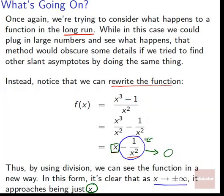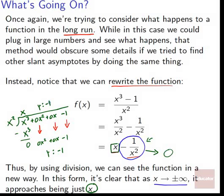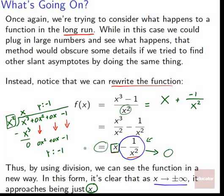We can also get this through polynomial long division, which is necessary for more complicated denominators. Dividing x squared into x cubed minus 1: x squared goes into x cubed just x times. x times x squared gives us x cubed; subtracting leaves 0. Bringing everything down gives 0x squared plus 0x minus 1, leaving a remainder of negative 1. So x cubed minus 1 over x squared equals x plus the remainder negative 1 over x squared — exactly the same result.